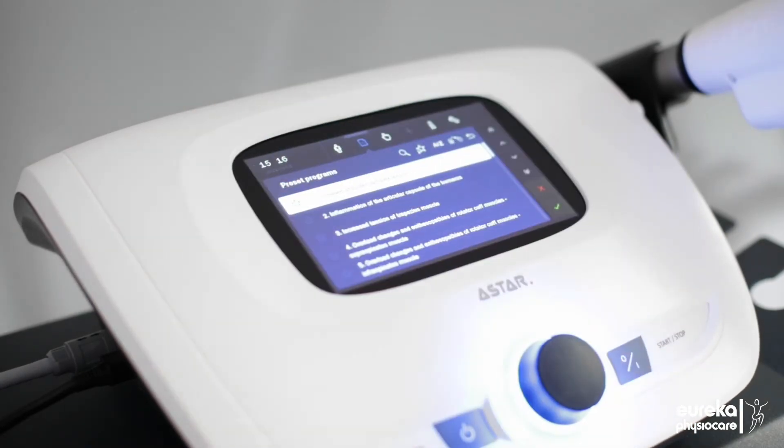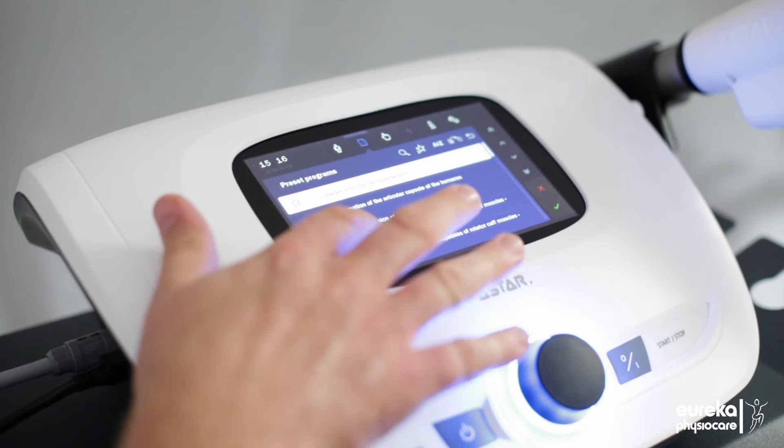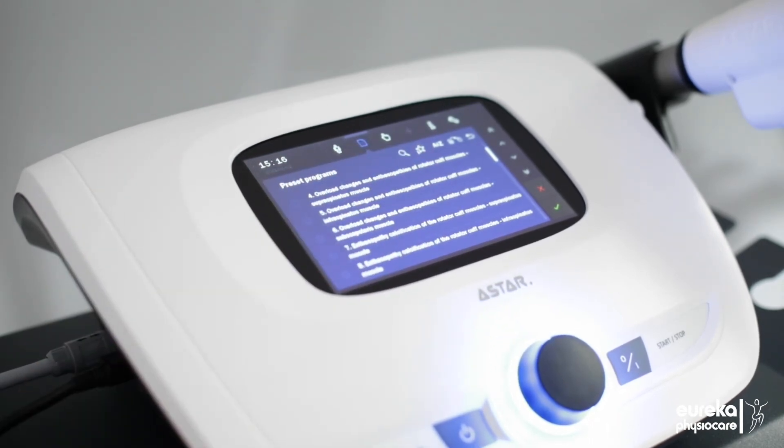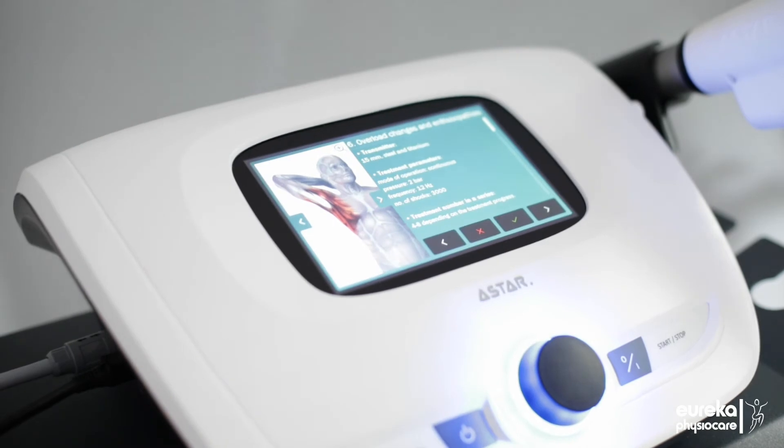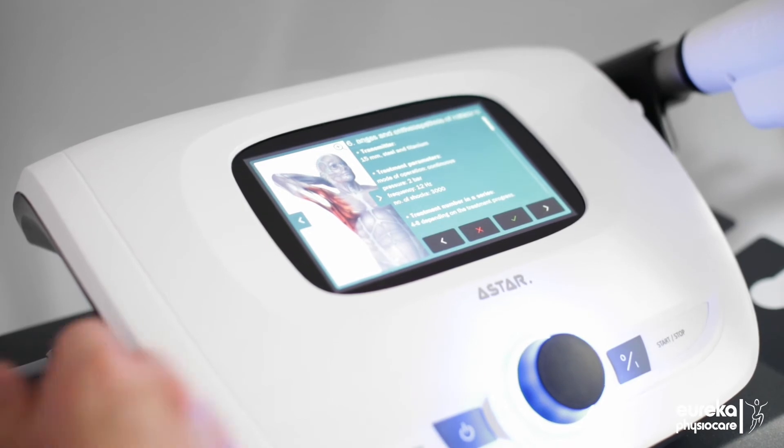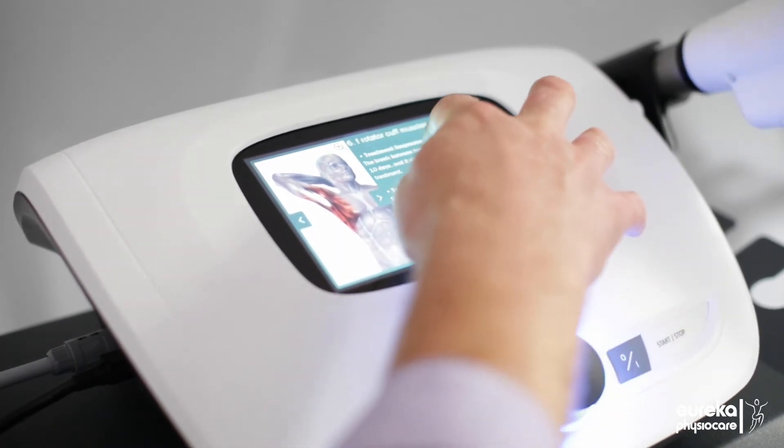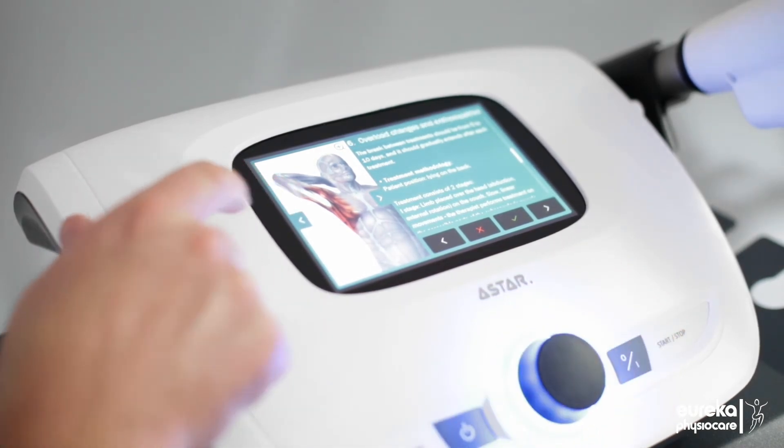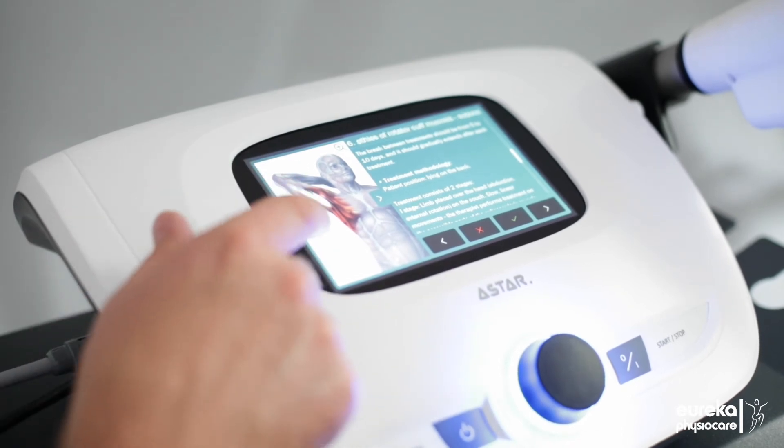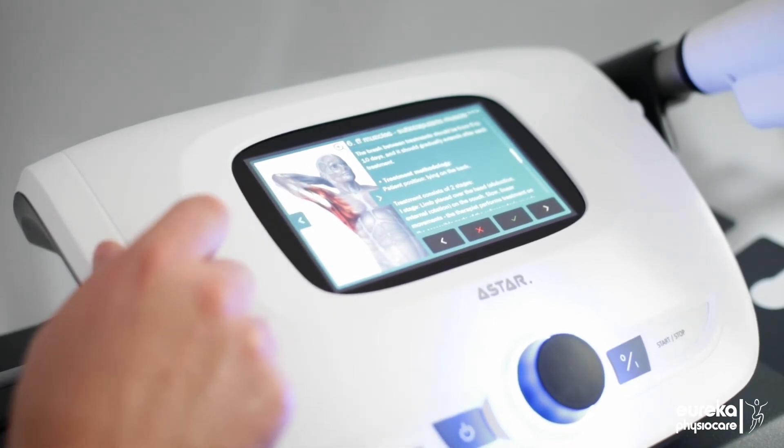So you can see here you've got a very comprehensive list of preset protocols which can be scrolled or searched, and by selecting one of those protocols and selecting the information button, this will load more information on that particular protocol including the treatment parameters, the number of treatments required typically, the methodology, and the treatment head also has a clear diagram showing where the treatment needs to be performed with very clear directional arrows.